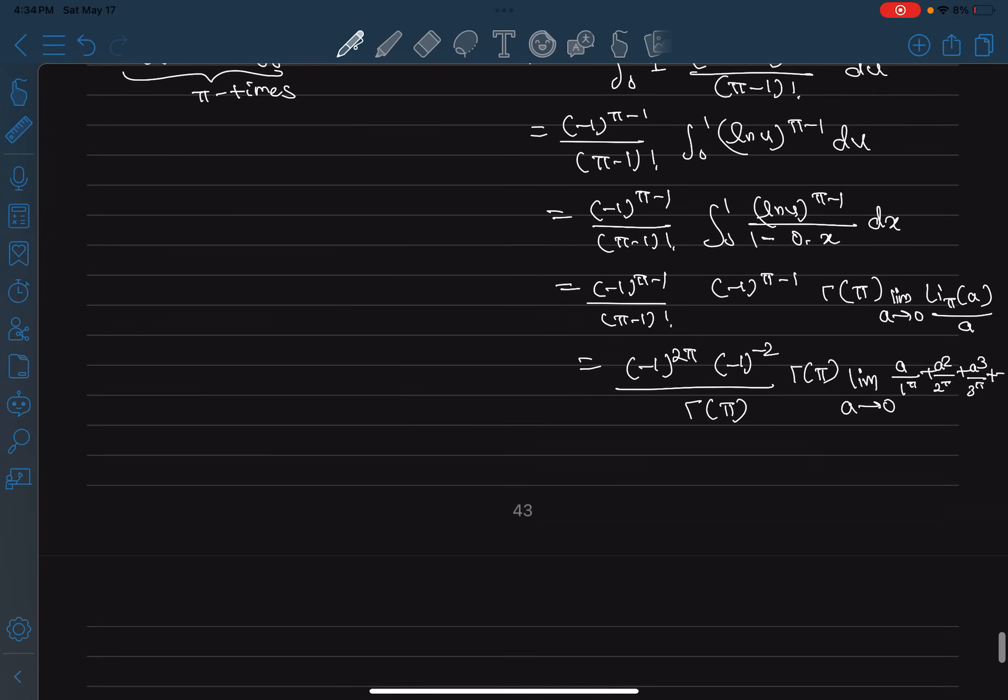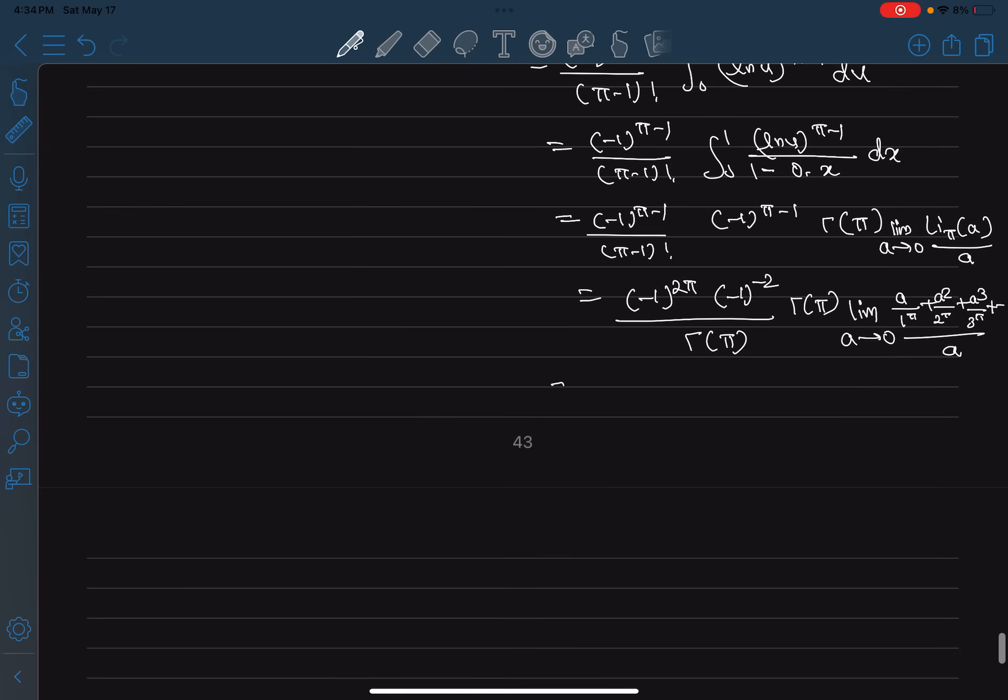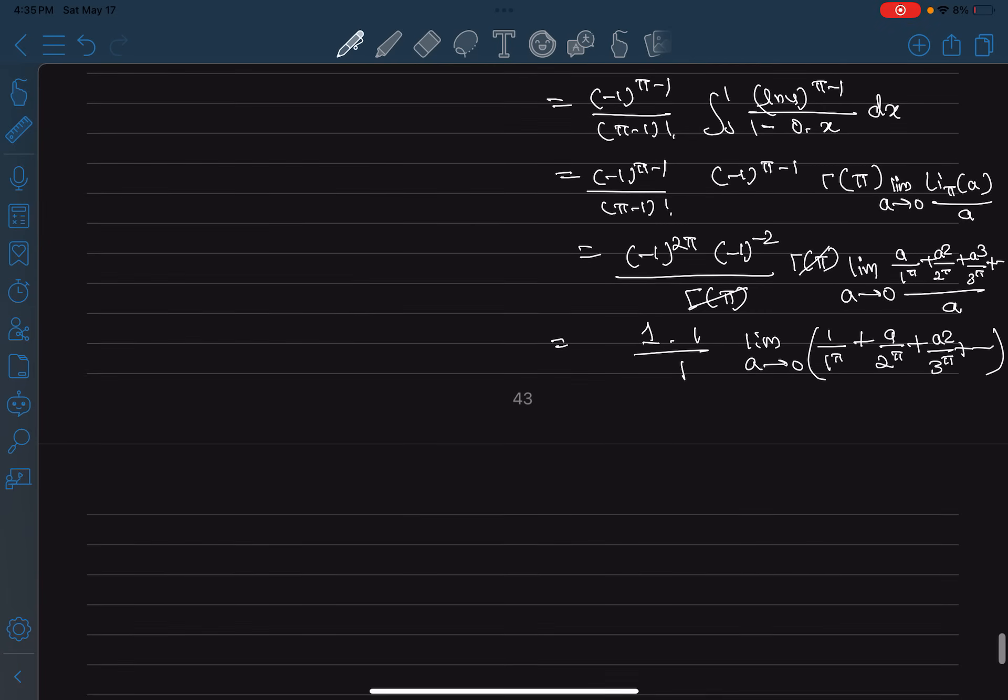And then now this is just 1 because negative 1 square is 1 and then 1 to the power π, no matter what that's just 1. Negative 1 square is just 1 also and that's the reciprocal, that's just 1 and this just cancels out, so that's also 1. And then limit a goes to 0, we have 1 by 1 to the power π plus a by 2 to the power π plus a square by 3 to the power π and so on, and then except the first term all of them actually go to 0, and then that's a pretty nice answer: just 1.